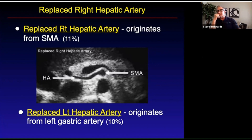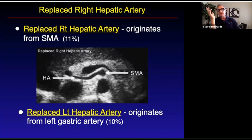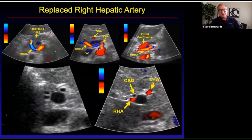There's also a replaced left hepatic artery. It's harder to see because it originates off the left gastric artery, which is very hard to image. You can see here the artery going under the pancreatic head — that's the replaced right hepatic artery. Here you can see it coming off the SMA.